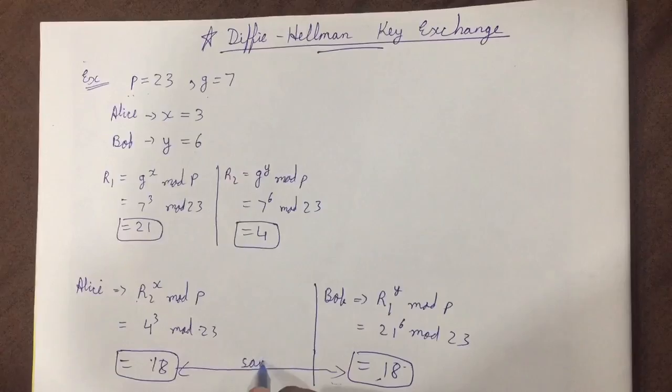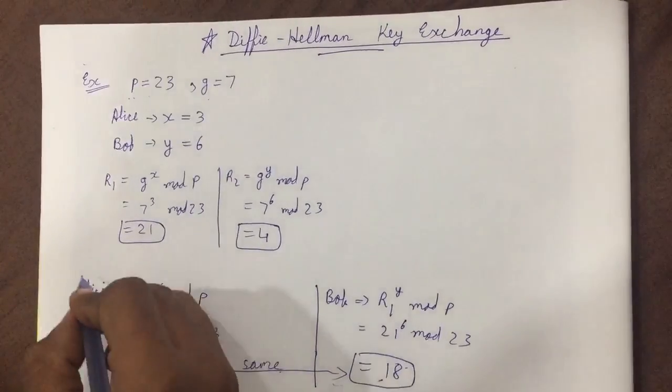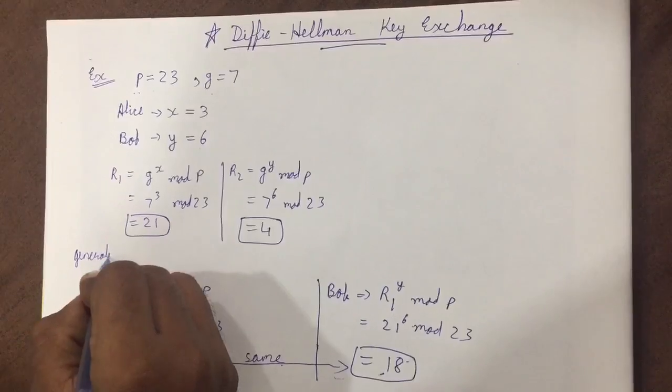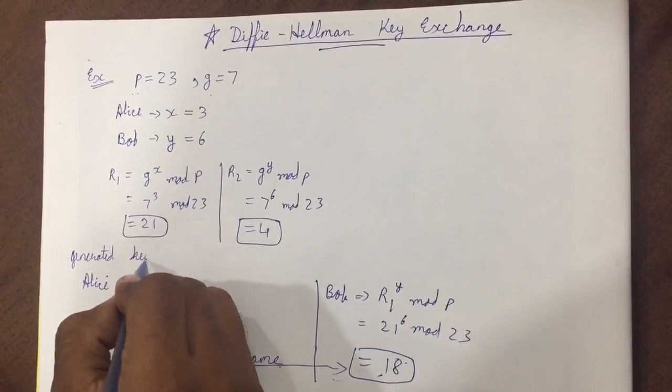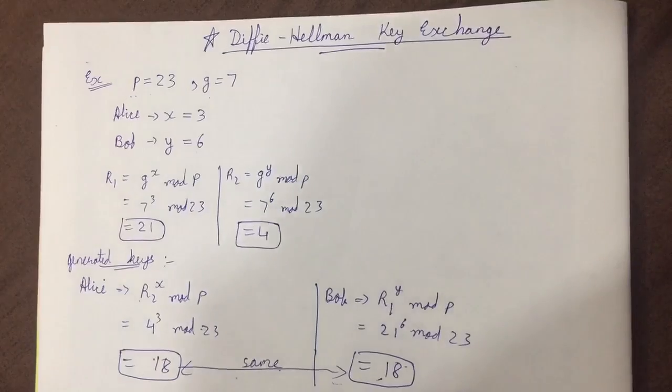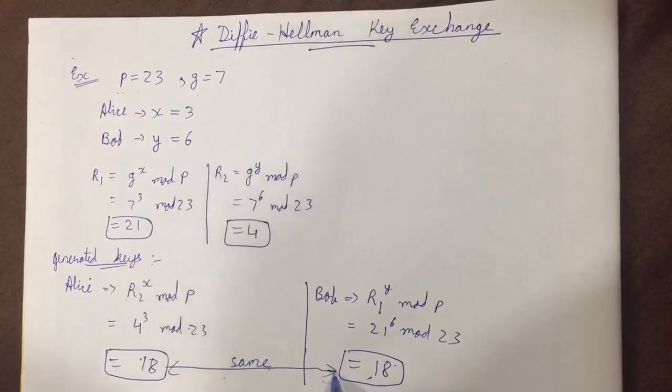Here we generated keys for Alice and Bob, that is sender and receiver. So let me give you an example.